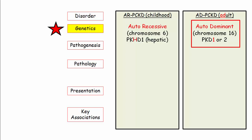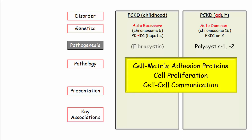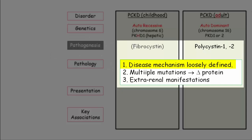In the adult form, the PKD2 mutation is located on chromosome 4, not 16 — but don't stress over chromosomal numbers. In autosomal recessive disease, fibrocystin is the defective protein, whereas in autosomal dominant disease, polycystin is defective. Both mutations affect proteins involved in cell adhesion, proliferation, and cell-to-cell communication. Importantly, the disease mechanisms are loosely defined so you are unlikely to see test questions about these proteins specifically.